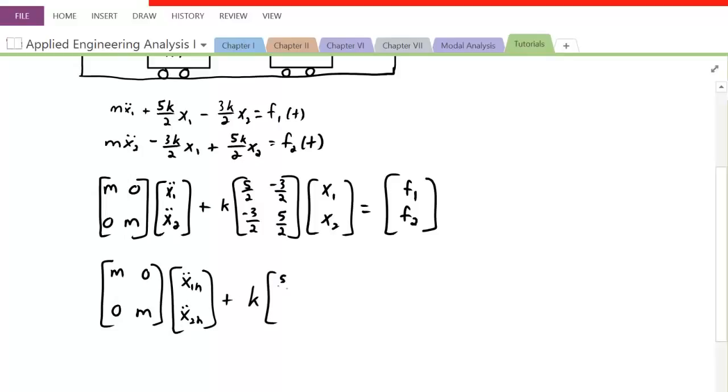K, 5 over 2, negative 3 over 2, negative 3 over 2, and 5 over 2, in respect to X1 homogeneous, X2 homogeneous. And when it's homogeneous, it means that it's equal to 0. So let me set this equal to 0.